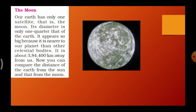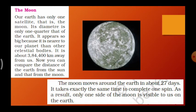The Moon is about three lakh eighty four thousand four hundred kilometers away from us. It is very close to us. You can compare the distance of the Earth from the Sun and that from the Moon, and calculate which is nearer — the Sun or the Moon.